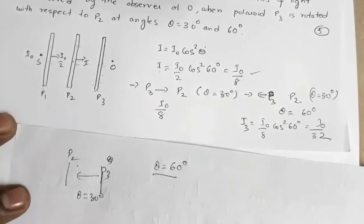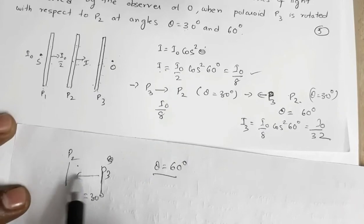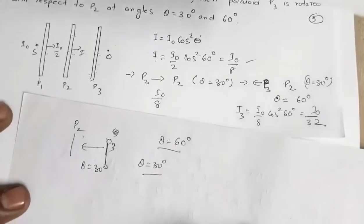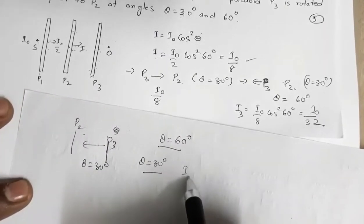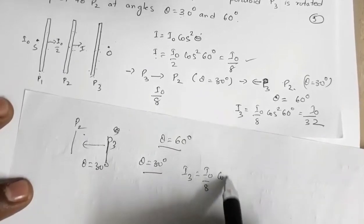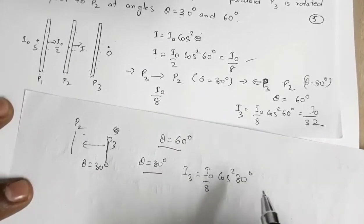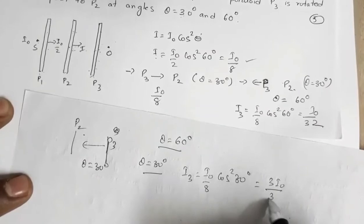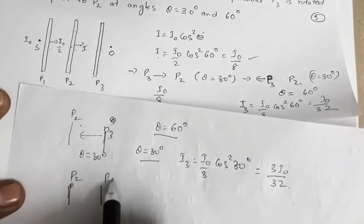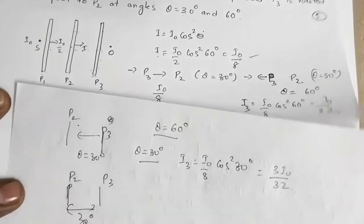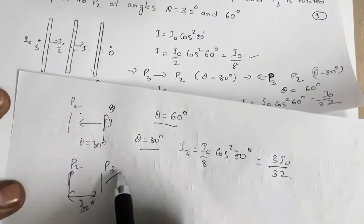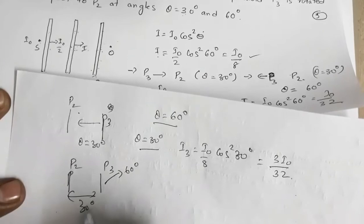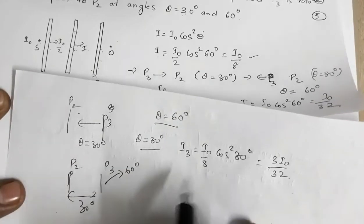This was a 5-mark question. For path difference δx = λ/6, path difference is related to phase difference by: δφ = (2π/λ)·δx. A phase difference of 2π is equivalent to a path difference of λ, so the phase difference corresponding to δx = λ/6 is δφ = (2π/λ)·(λ/6) = π/3.